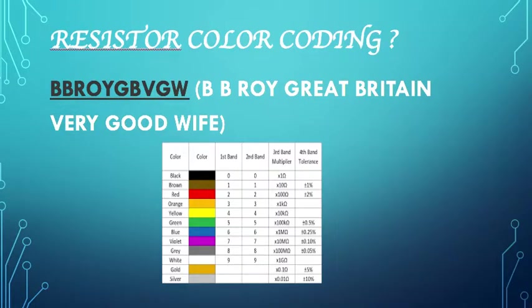There is something known as resistor color coding. When I was in school and in college also, this coding helped me a lot. It goes by the name of, for me you can make your own, but for me it was B.B. Roy, Great Britain, Very Good Wife. What does it mean? These are the initials of the colors, the order in which we have to number and place the colors.